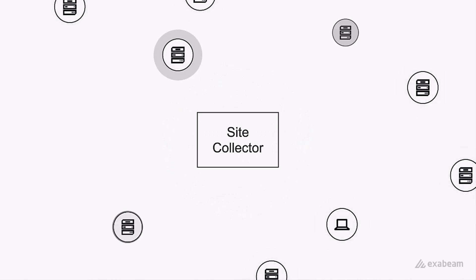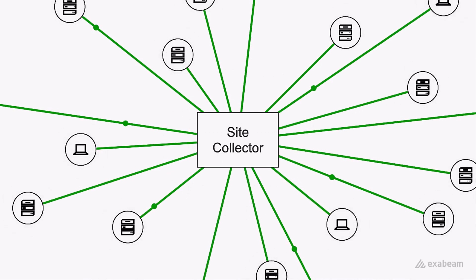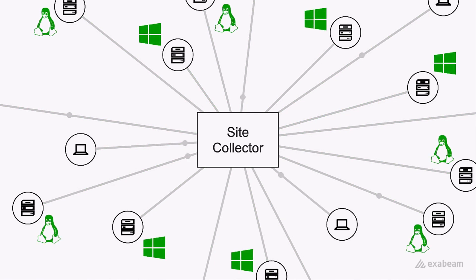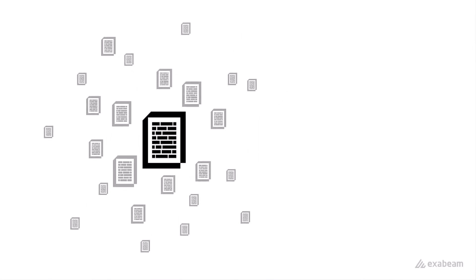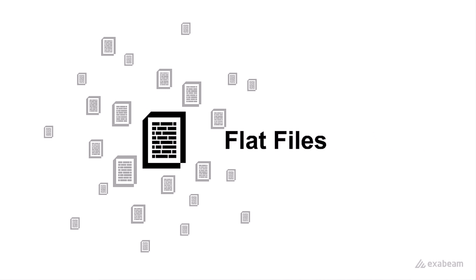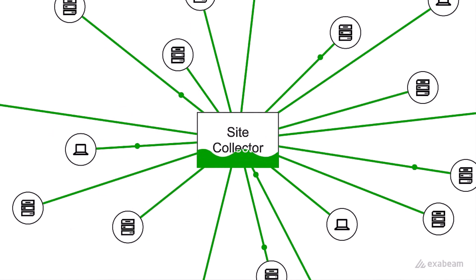Let's dive right in. What is a site collector? It's a software agent installed on network devices that collects logs from multiple local and remote sources. Log sources can come from a variety of devices such as Windows servers, Linux file servers, computers on the network, routers, etc. There are also many different types of logs that a site collector might gather: security logs, application logs, system logs, as well as flat or text files.